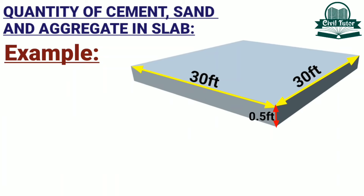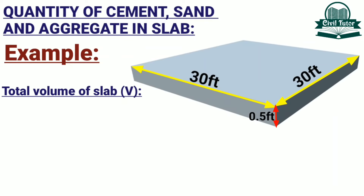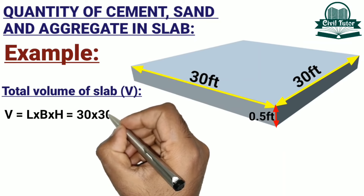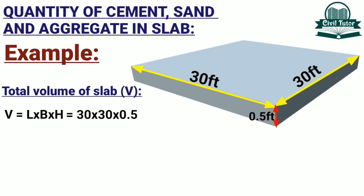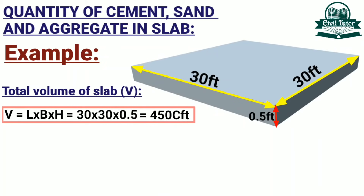In order to calculate the quantity of material used in the slab, we first need to calculate the total volume of slab. Total volume of slab equals length (30 feet) multiplied by breadth (30 feet) multiplied by thickness (0.5 feet), giving a total volume of 450 cubic feet.